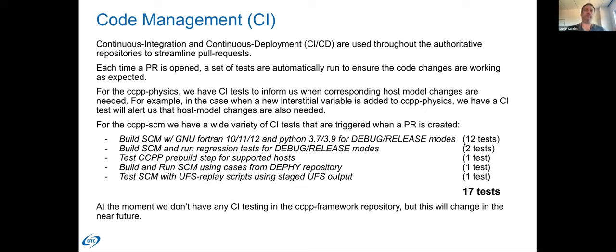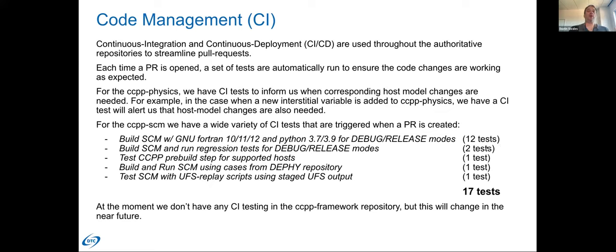For the single column model, we have quite a bit of continuous integration tests — actually all of our testing is handled through the CI. Luckily the single column model is pretty lightweight — it's one column, doesn't require a lot of data, so it's simple to build and run. We have a whole suite of tests triggered every time a pull request is created. The big one is building and testing the single column model with different versions of Fortran and Python for both debug and release modes — six for debug, six for release, for three Fortran and three Python versions: 12 tests total.